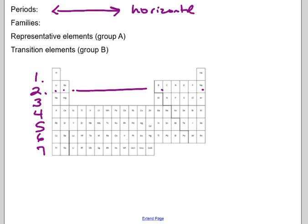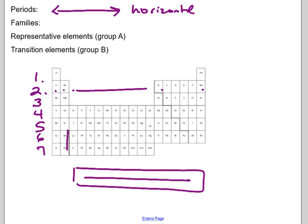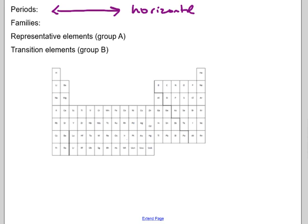The lanthanide and actinide series that you see below your periodic table actually fit right here in period six and seven. They are usually removed and placed at the bottom only to make more space on the periodic table.